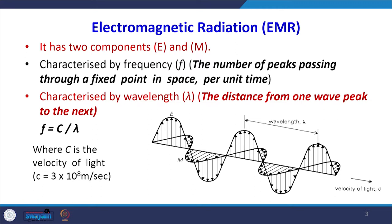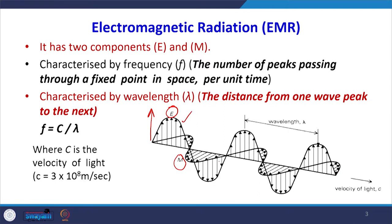Electromagnetic radiation has two components in two perpendicular directions. One is the y direction, which is the electric field, and the other is the x direction, which is the magnetic field. These are the two components which are mutually perpendicular to each other. Any radiation travels in a sine wave form, so you can see sinusoidal waveforms along both axes. These are the two components of electromagnetic radiation — as you can see from the name itself: electro and magnetic.